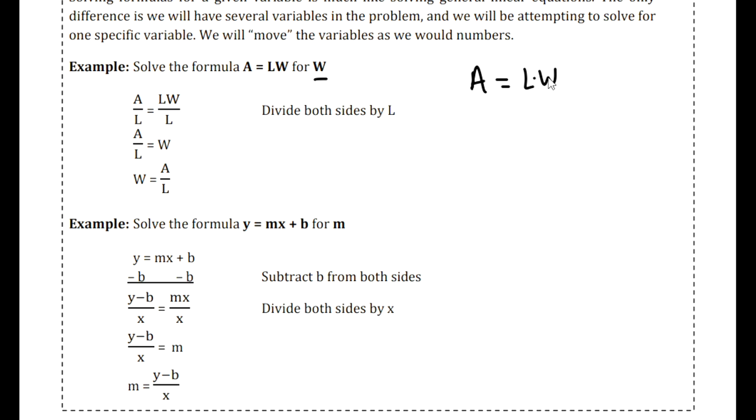So this is l times w. If we do the opposite of multiplying by l, that's dividing by l, we see here that the width of a rectangle is equal to the area of the rectangle divided by the length.